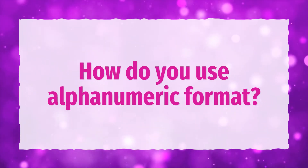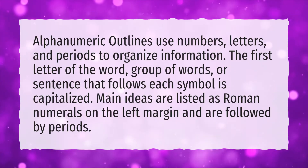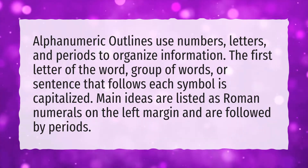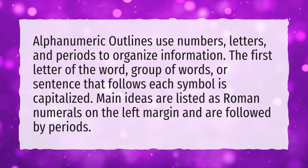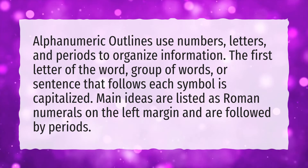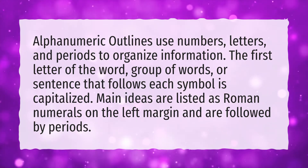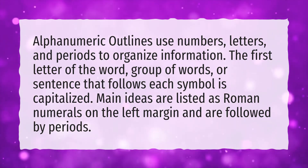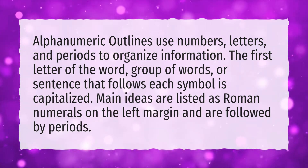How do you use alphanumeric format? Alphanumeric outlines use numbers, letters, and periods to organize information. The first letter of the word, group of words, or sentence that follows each symbol is capitalized. Main ideas are listed as Roman numerals on the left margin and are followed by periods.